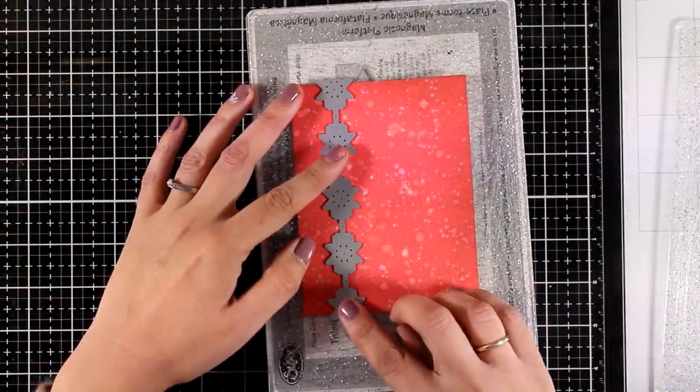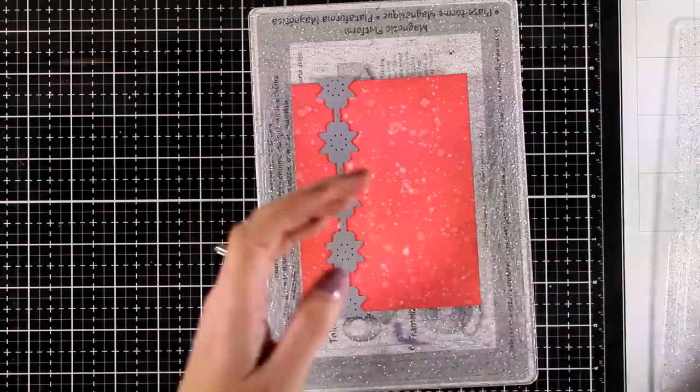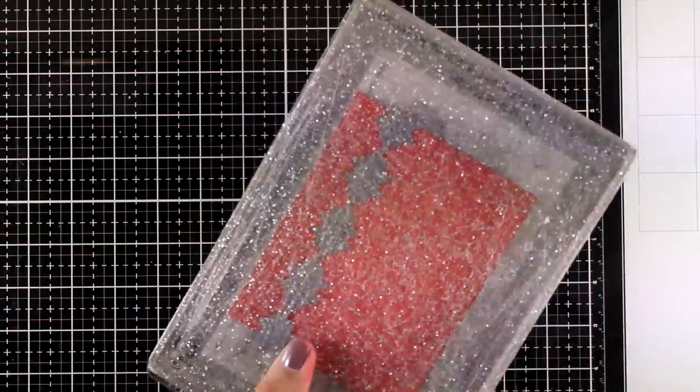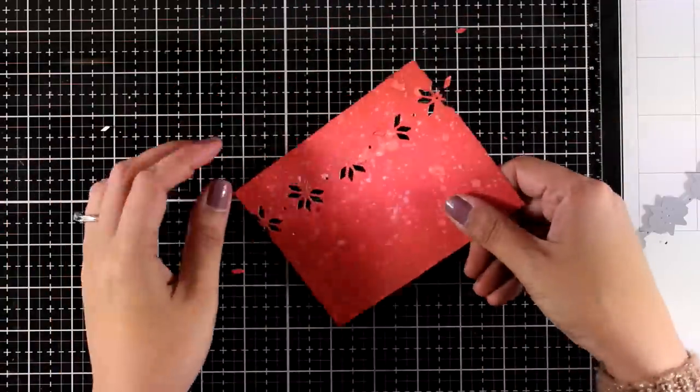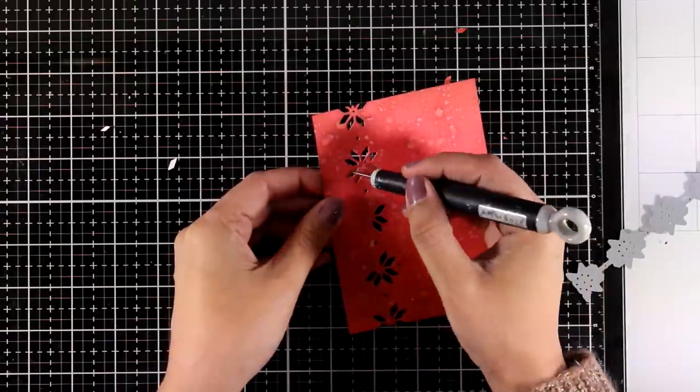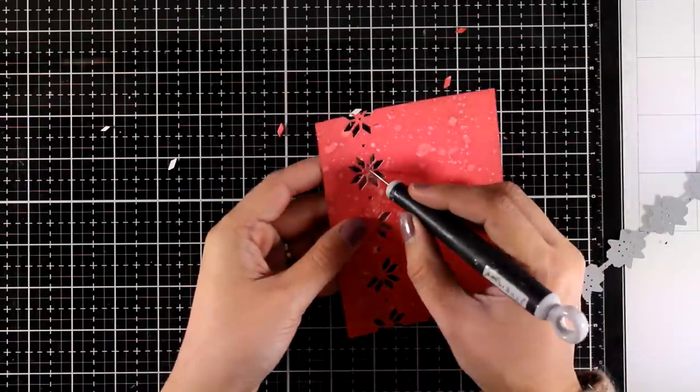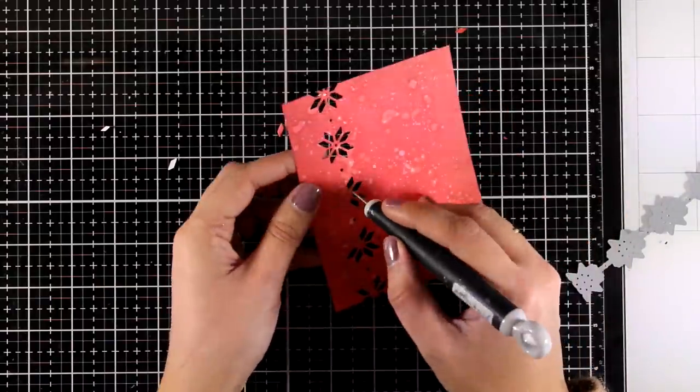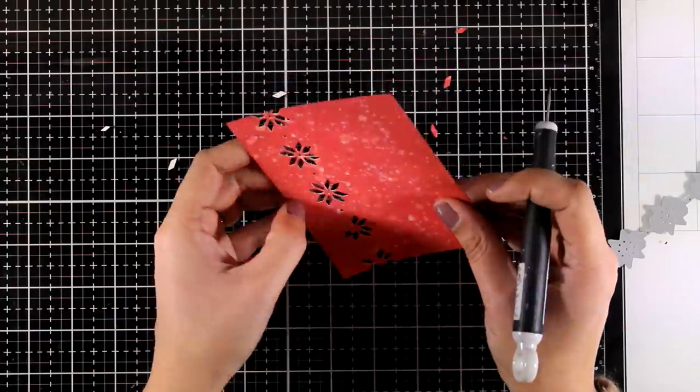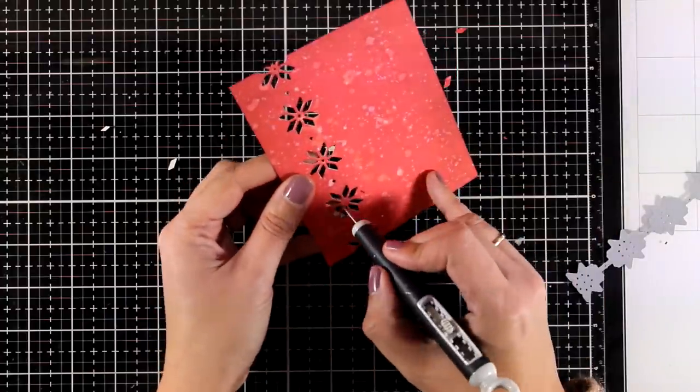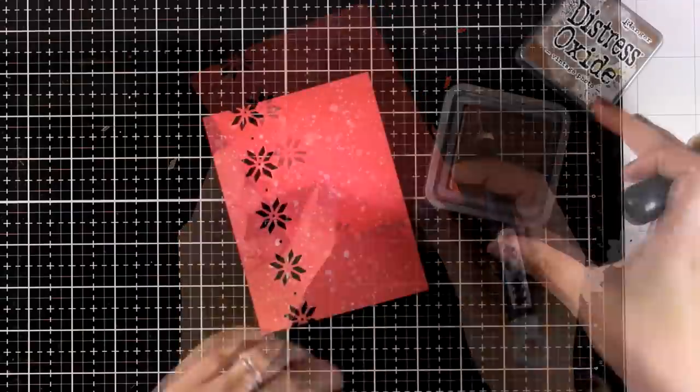Now I'm going to place my border die on top and again this is the Holiday Knit Border. It's a gorgeous design and you can see here how it looks. You can create shaker cards with that. You can add many times this die along your panel to create a beautiful pattern. I decided to use it only once on the side.